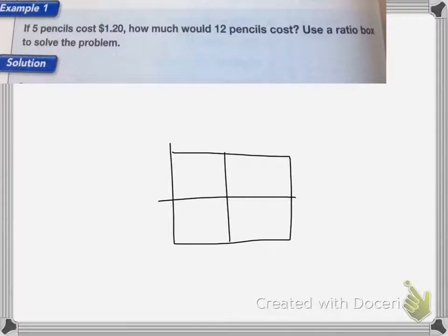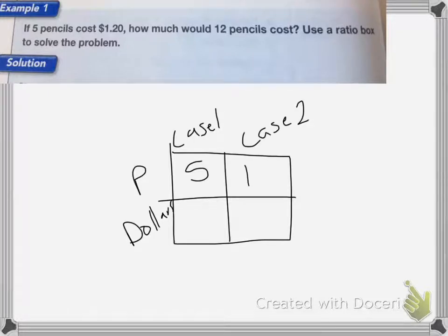We'll use our ratio box. We have pencils and dollars for how much it costs. If I have 5 pencils, let's say I bought 2 cases. Case 1, I have 5 pencils, and case 2, I have 12 pencils.